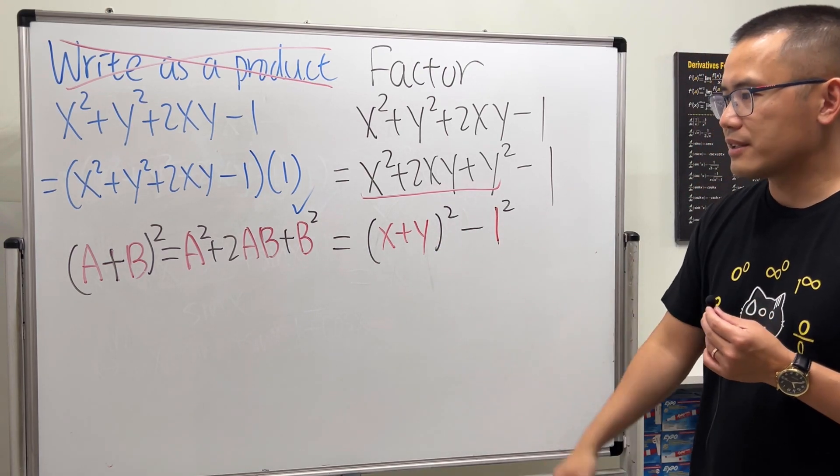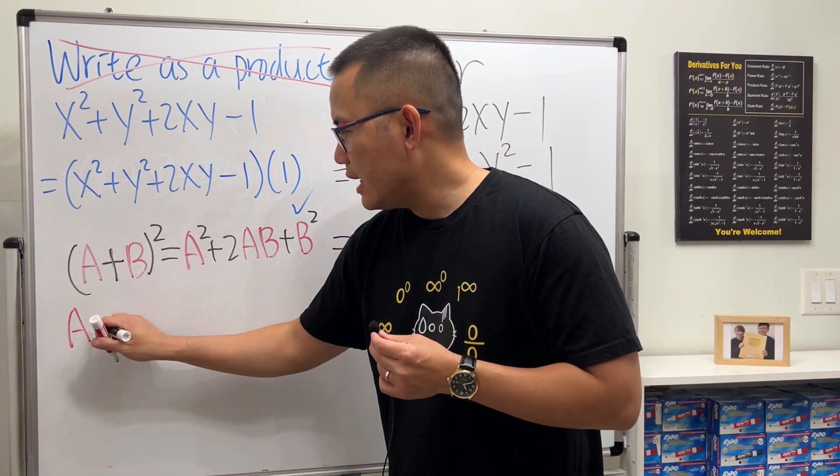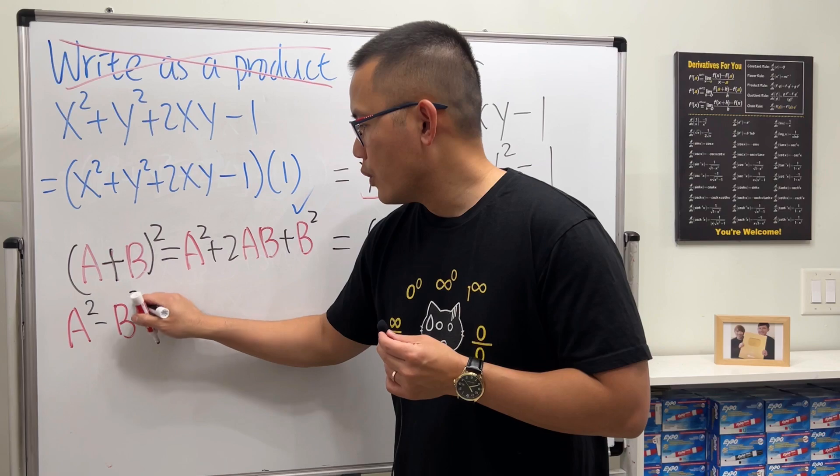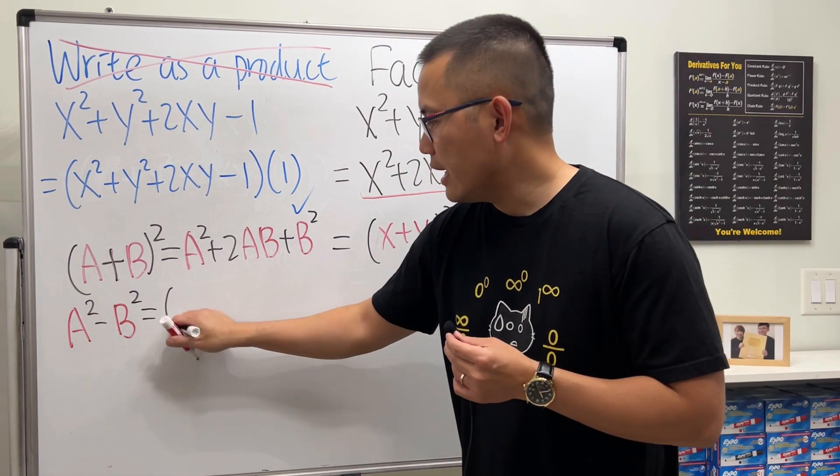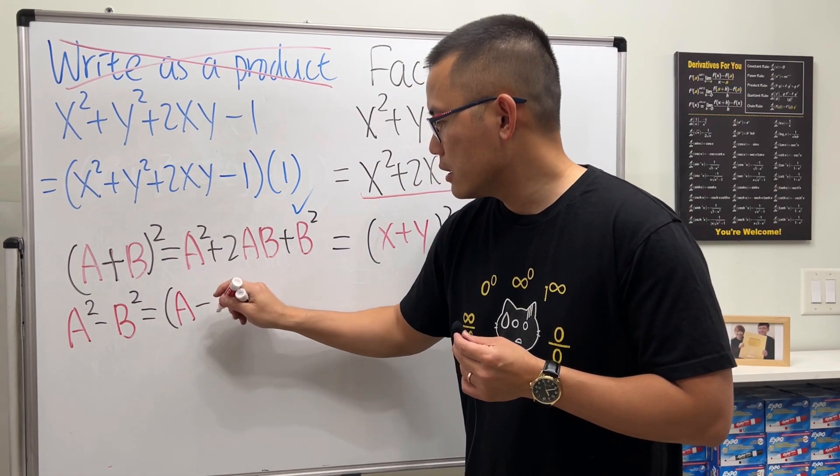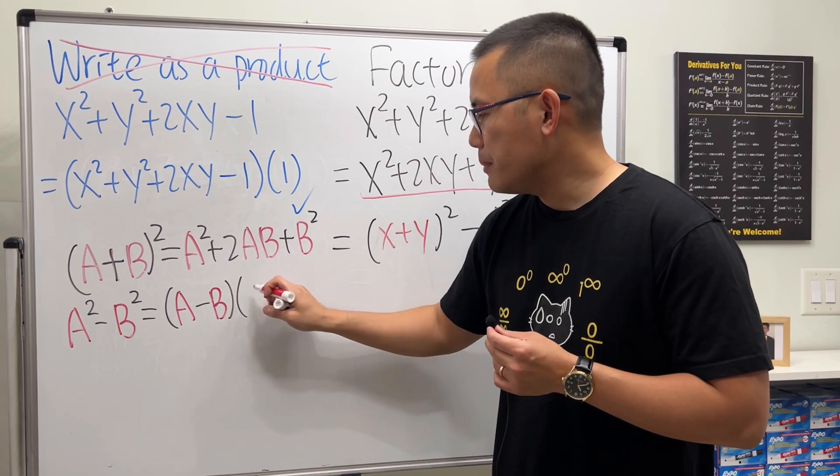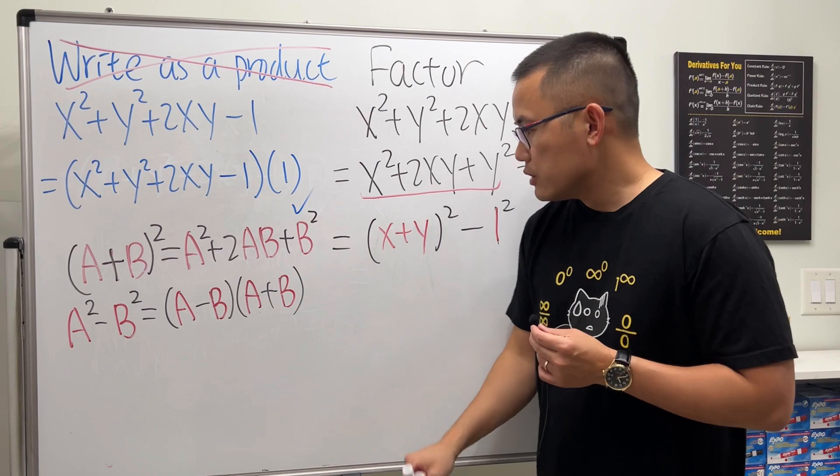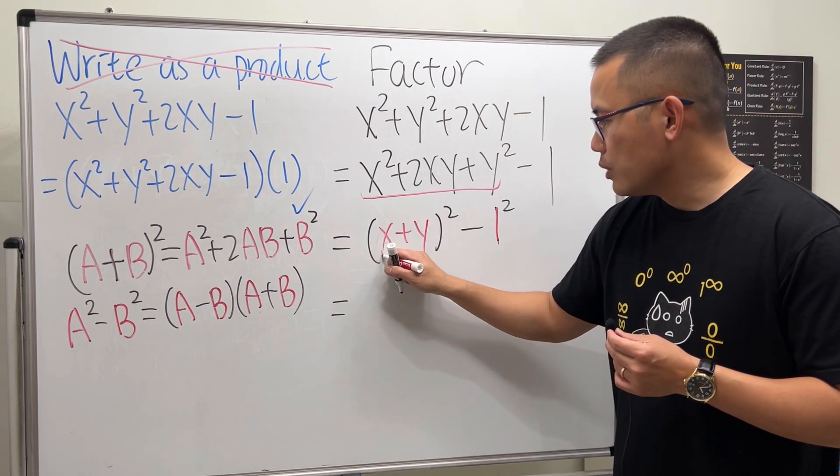Have a look. If we have a²-b², we can factor this and we get (a-b)(a+b). This is how we factor the difference of two squares.